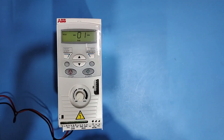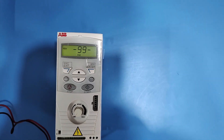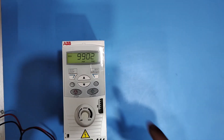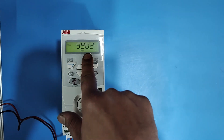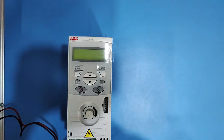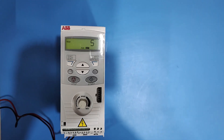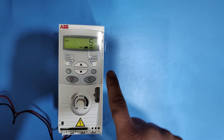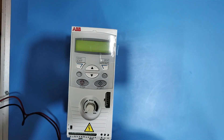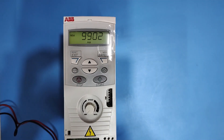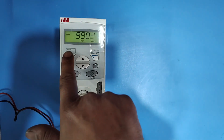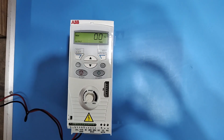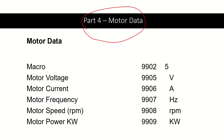When you reach group 99, press Enter once. Go to parameter number 9902. Press Enter twice, then set the value to 5 for Hand Auto. If another value is shown, press the up or down key to set value 5. Press Enter once to save. Your drive macro will change to Hand Auto macro. Press Exit to return to the main display.